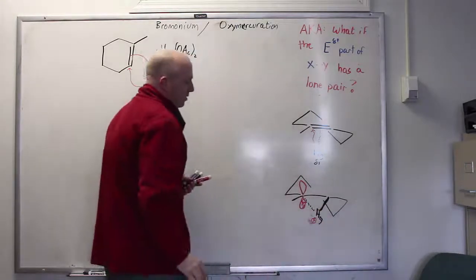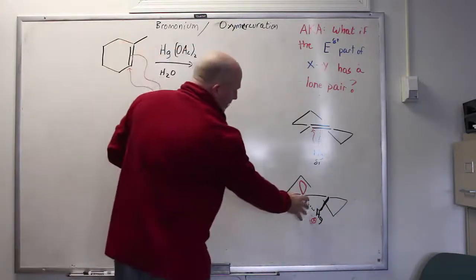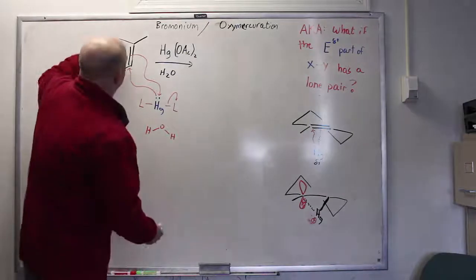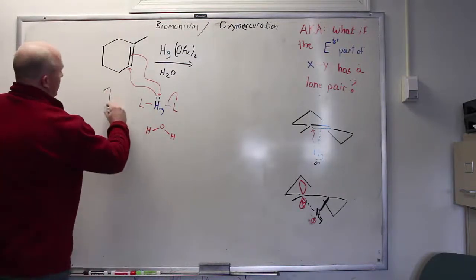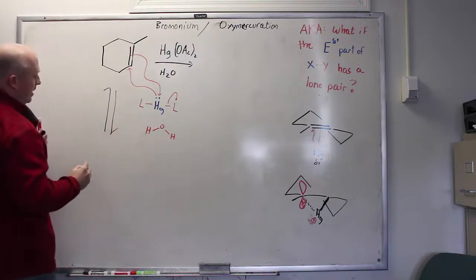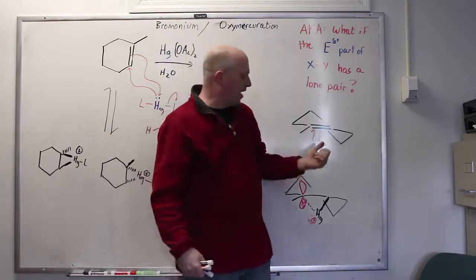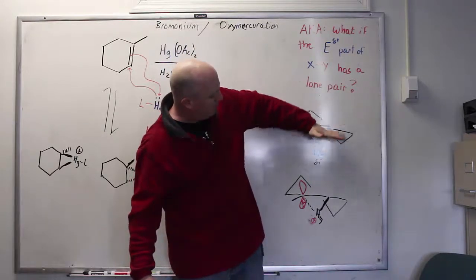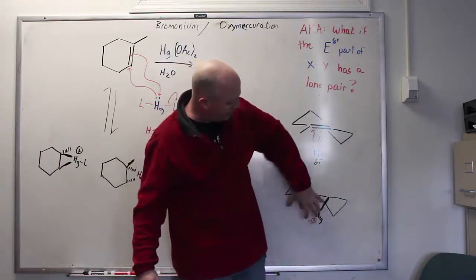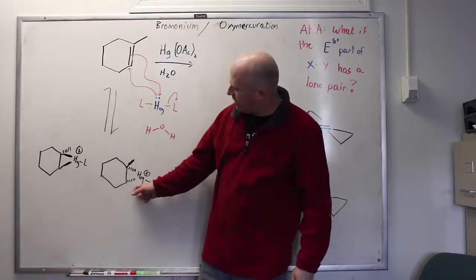And that's because the tertiary side can better tolerate having the plus. So we're going to draw a formal plus on the mercury, but in practice what that really means is that there's a lot of electron density missing from the tertiary side. So let me go ahead and draw the intermediate.